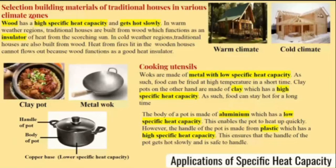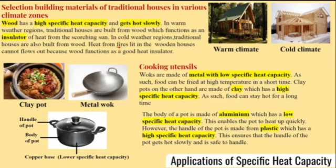Application of specific heat capacity. Selection of building materials for traditional houses in various climate zones. Wood has a high specific heat capacity and gets hot slowly. In warm weather regions, traditional houses are built from wood, which functions as an insulator of heat from the scorching sun. In cold weather regions, traditional houses are also built from wood, as heat within the wooden house cannot flow out because wood functions as a good heat insulator.